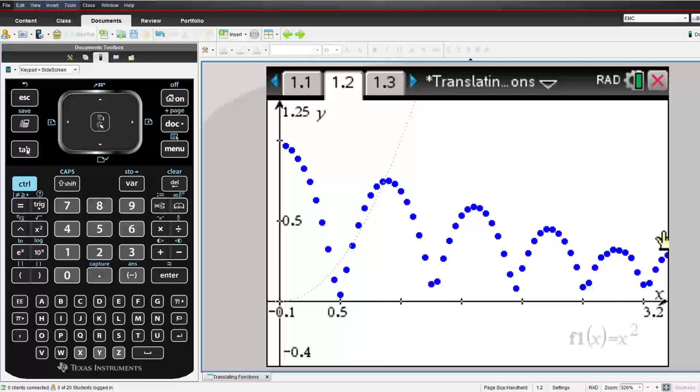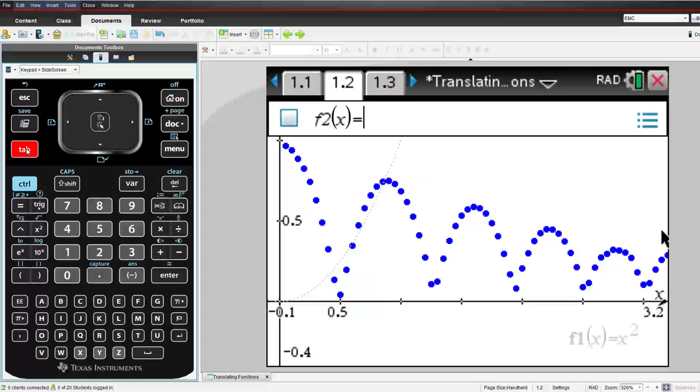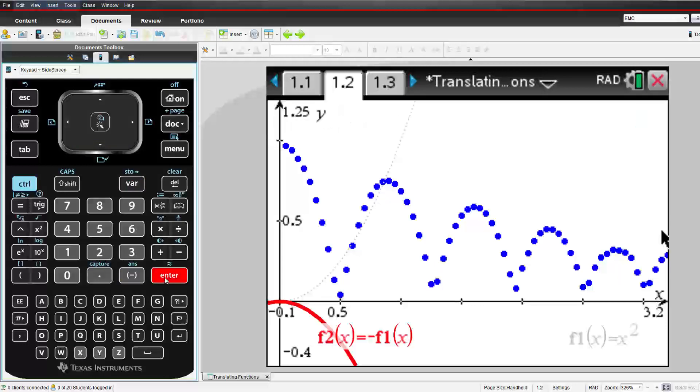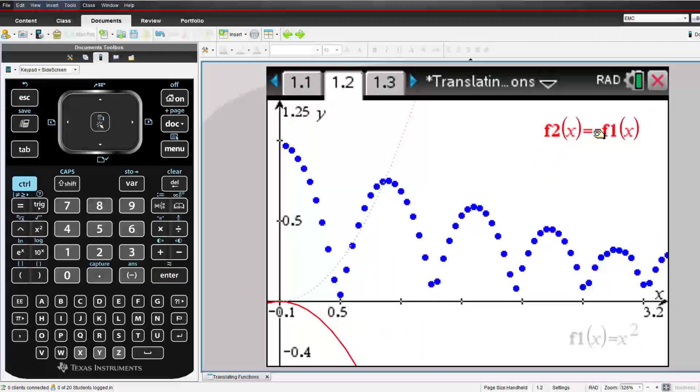The first set of data is the motion of a bouncing ball. Students are required to use f2 of x to apply transformations to the function already defined in f1 of x as x squared. The first question explores transformations that create a reflection in the x axis. While we can see that this doesn't exactly model our bouncing ball, it's a starting point.